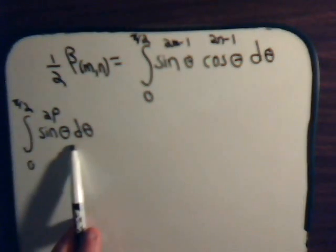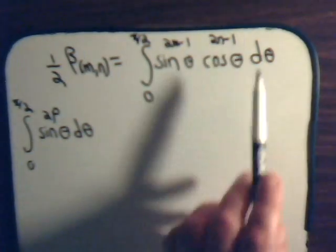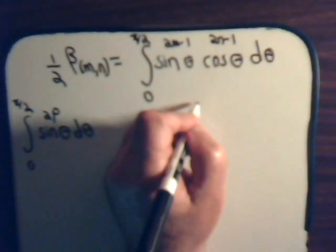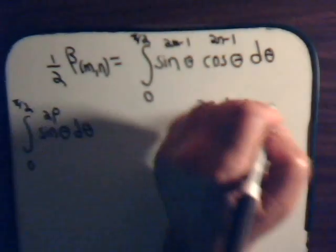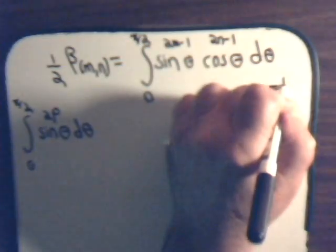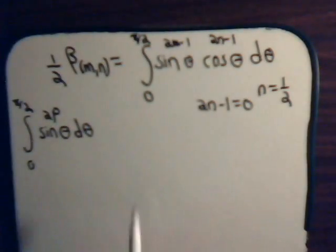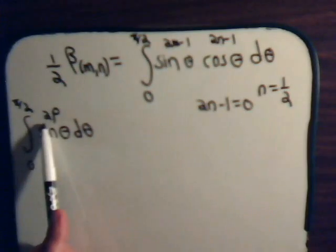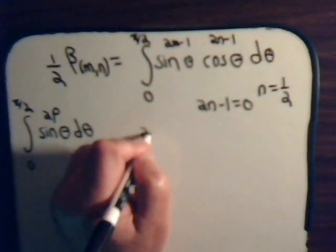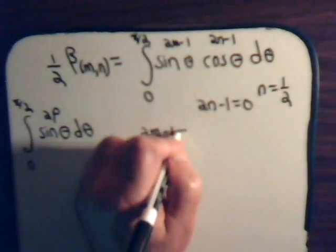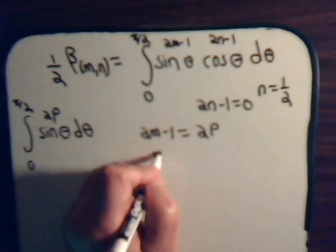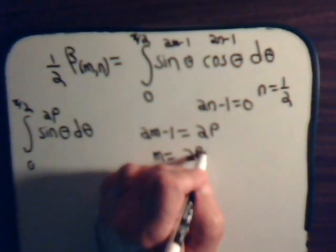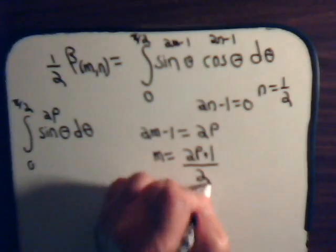Here there's no cosine term, so this has to be raised to the zero power — the cosine to the zero is just one. So we have two n minus one equals zero, which gives n equals one half. Now we want this to always be an even number, say two times p. So we have two m minus one equals two p, from which m equals two p plus one divided by two.